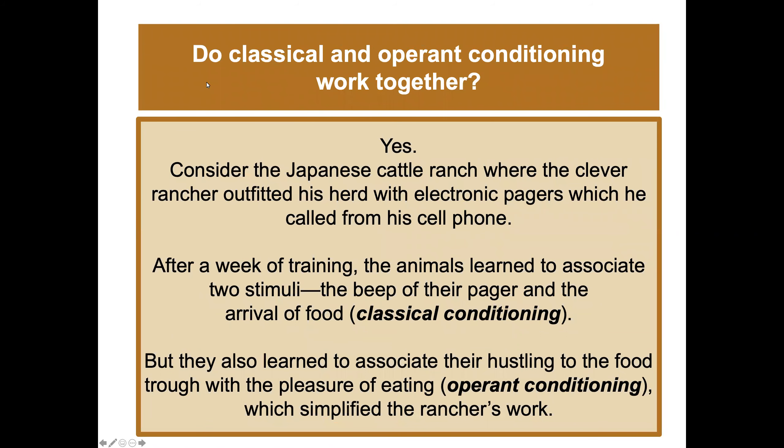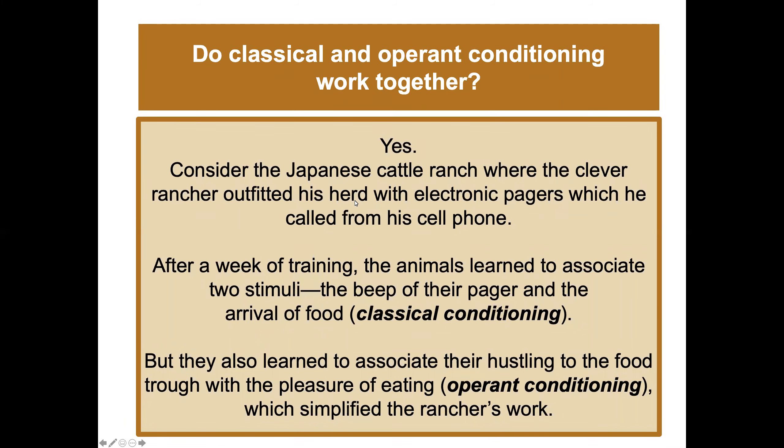Do classical and operant conditioning work together? Yes! A clever rancher in Japan outfitted his herd with electronic pagers which he called from his cell phone. After a week of training, the animals learned to associate two stimuli — the beep of their pager and the arrival of food — that's classical conditioning. They also learned to associate hustling to the food with the pleasure of eating — that's operant conditioning. This simplified the rancher's work considerably.